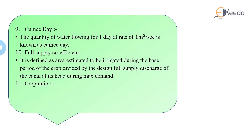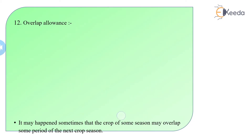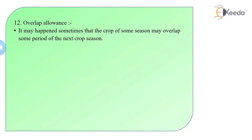The crop ratio depends upon the crop pattern, crop type, and crop season. Crop ratio is the ratio of the area irrigated in a Rabi season to the area irrigated in a Kharif season.